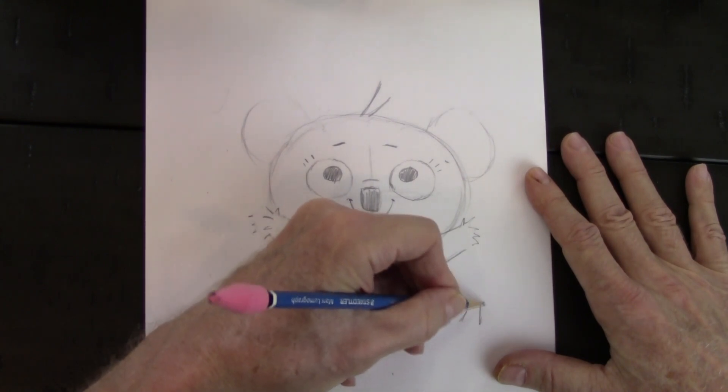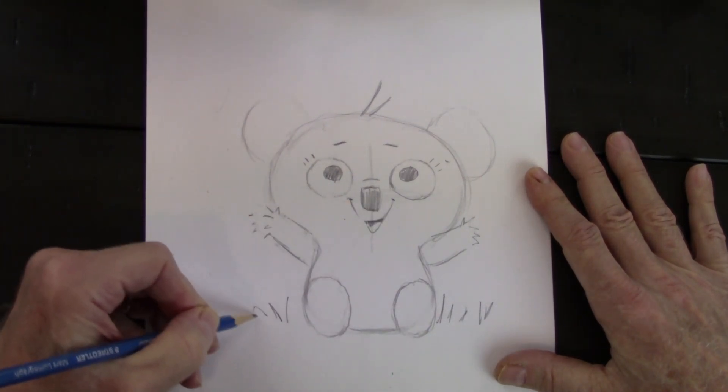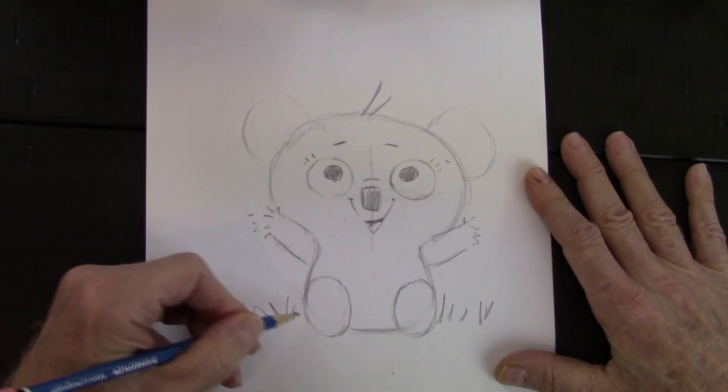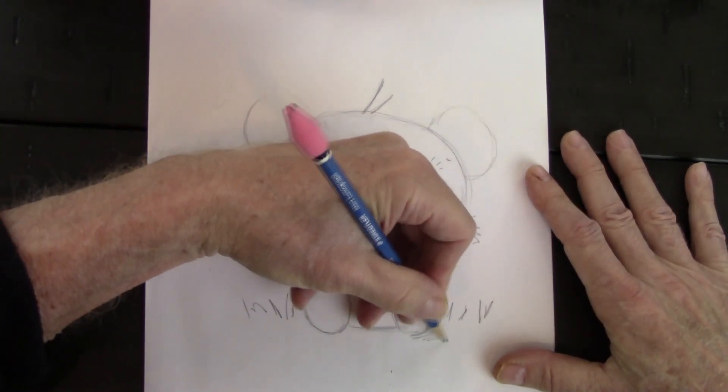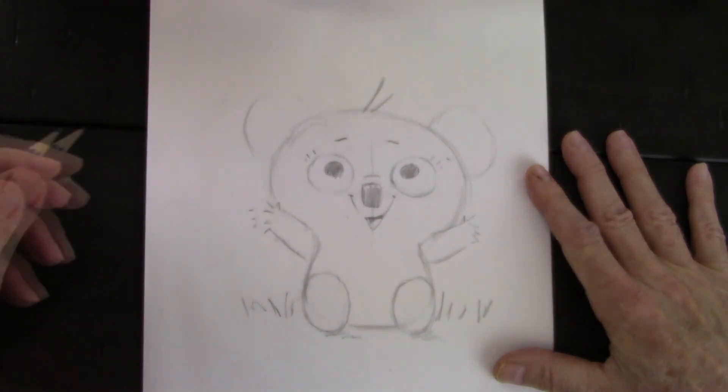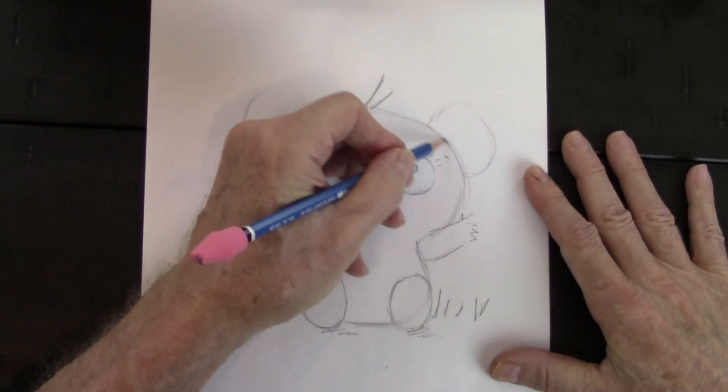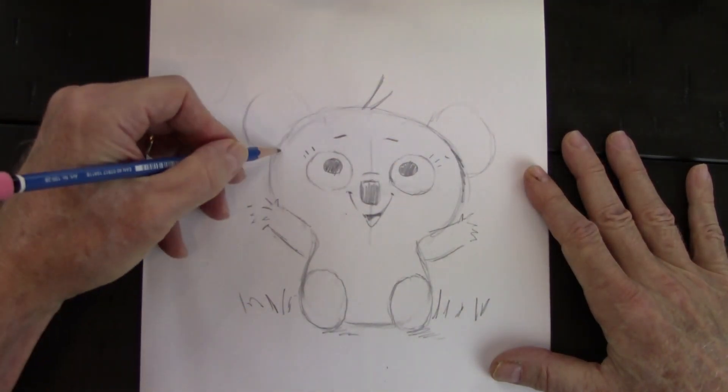We're going to put some grass here. Leave the fuzz for the ears. And a little shadow under the feet, kind of grounds it. And a little bit of fuzz on the side.